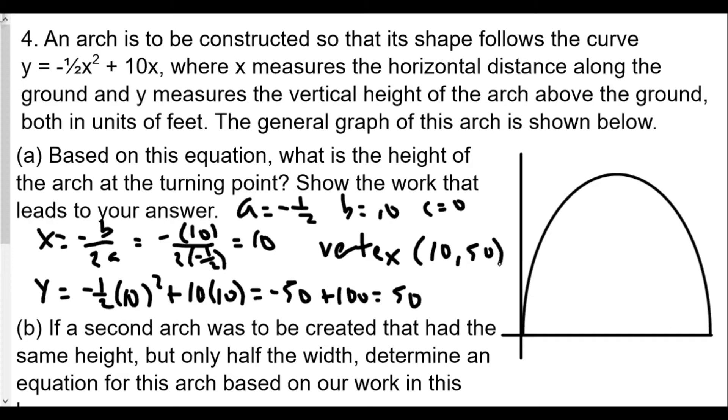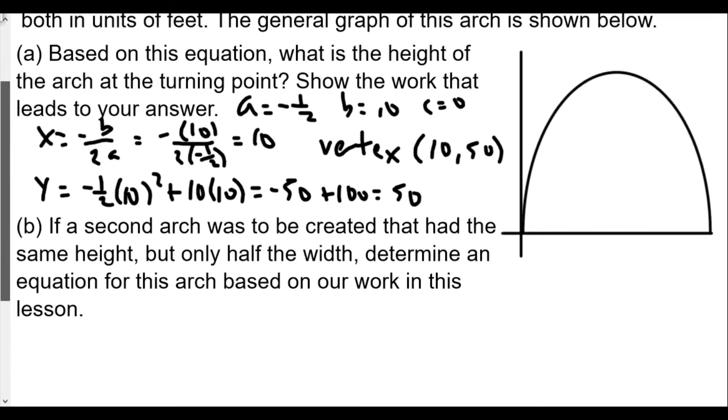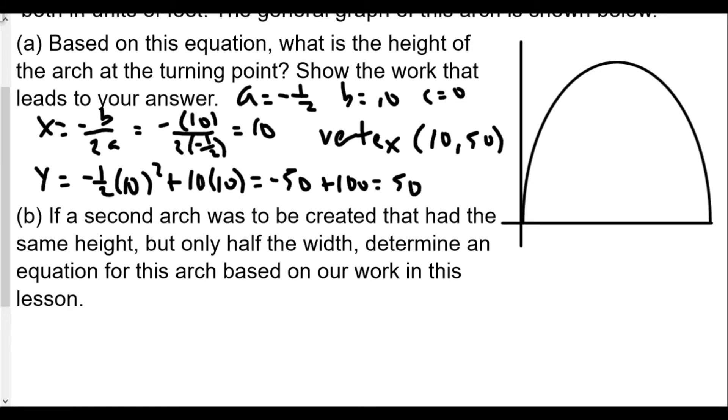We continue though. If a second arch is created to have the same height, but only half the width, determine an equation for this arch based on our work in this lesson. So if a second arch is created that has the same height, but only half the width. Well, to have half the width, we're having a compression.